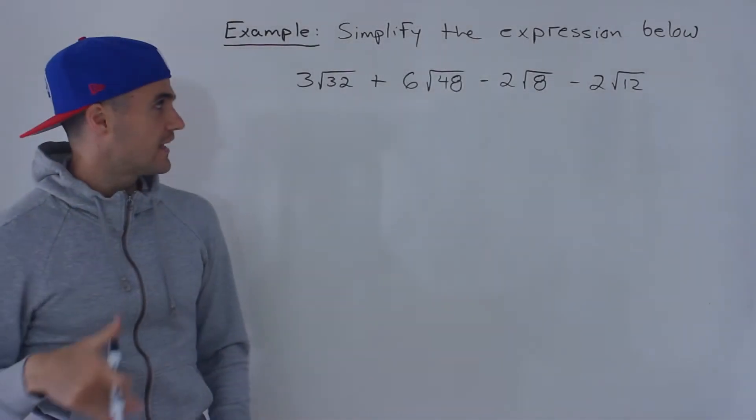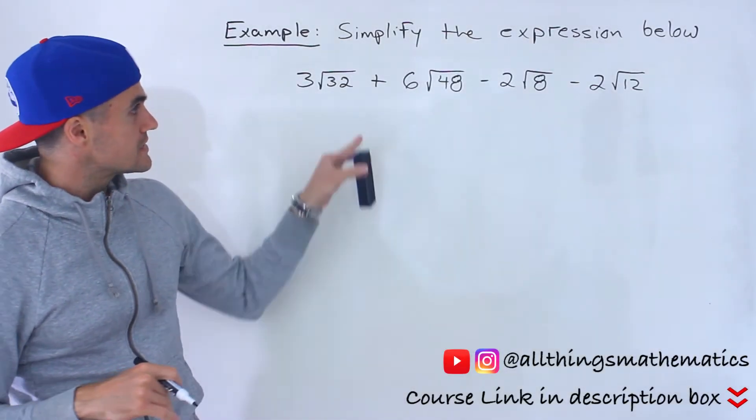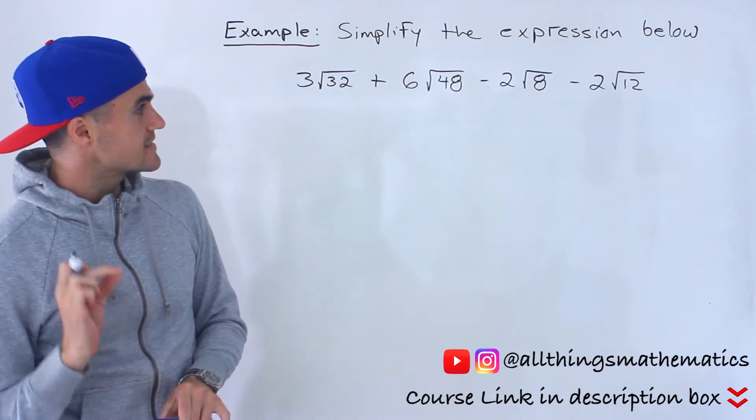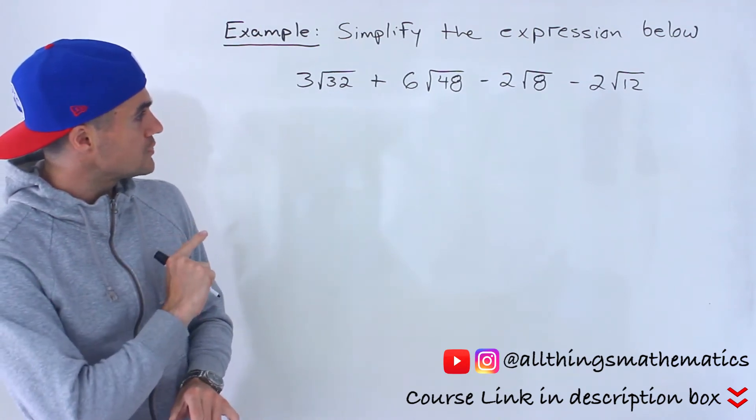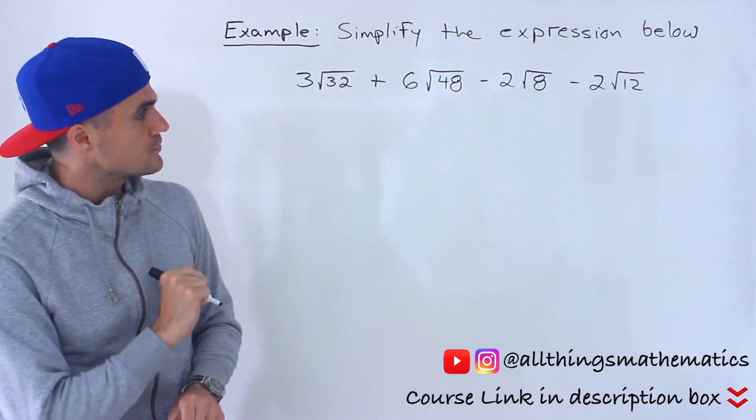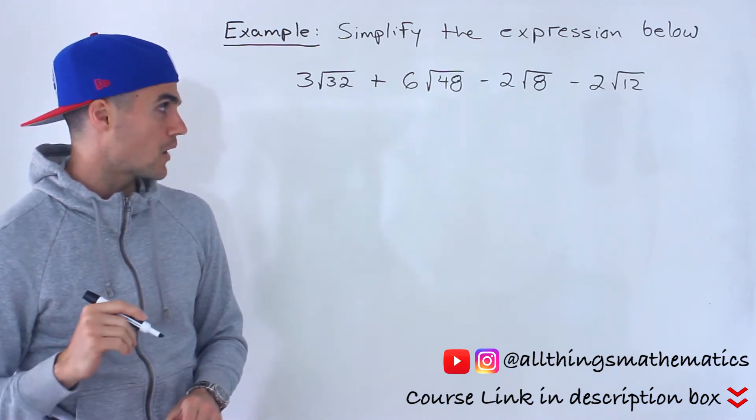What's up everyone? Patrick here and in this next question what we got to do is take this expression here and simplify it. So we got 3 root 32 plus 6 root 48 minus 2 root 8 minus 2 root 12.